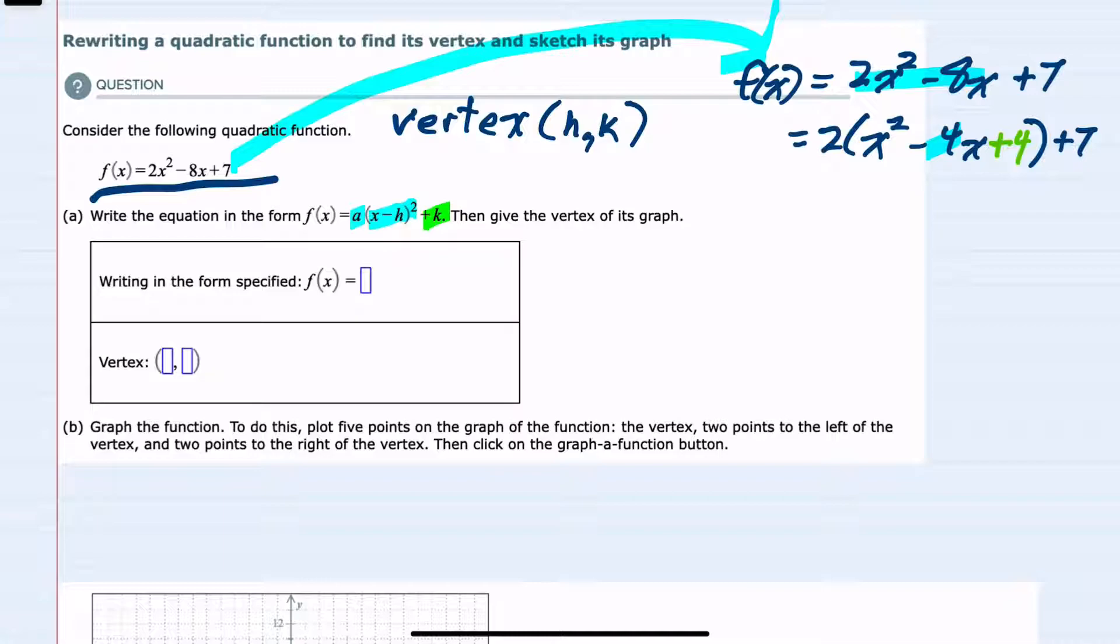But of course, I can't just add 4 without having to correct for that someplace. Since this 2 has been factored on the outside, I can see that I actually just added 8 because the 2 would be multiplied by the 4 to give me +8. So to correct for that, outside of the parentheses, I'm going to put -8. Inside the parentheses I added 4; distributing the 2 means I actually added 8, so I correct by subtracting 8 on the outside.